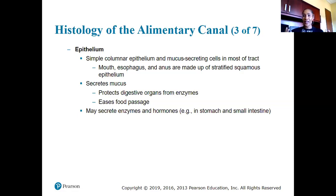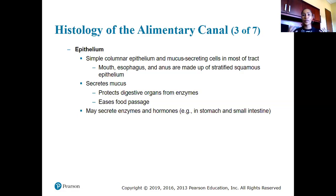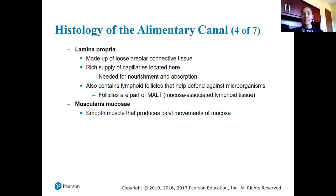We have mucus lining the digestive tract to help things move more smoothly so they don't get stuck. Depending on where we are in the body, the epithelium can also secrete enzymes and hormones — for instance in the stomach and small intestines. The lamina propria is made up of loose areolar connective tissue with a rich supply of blood capillaries needed for nourishment and absorption.